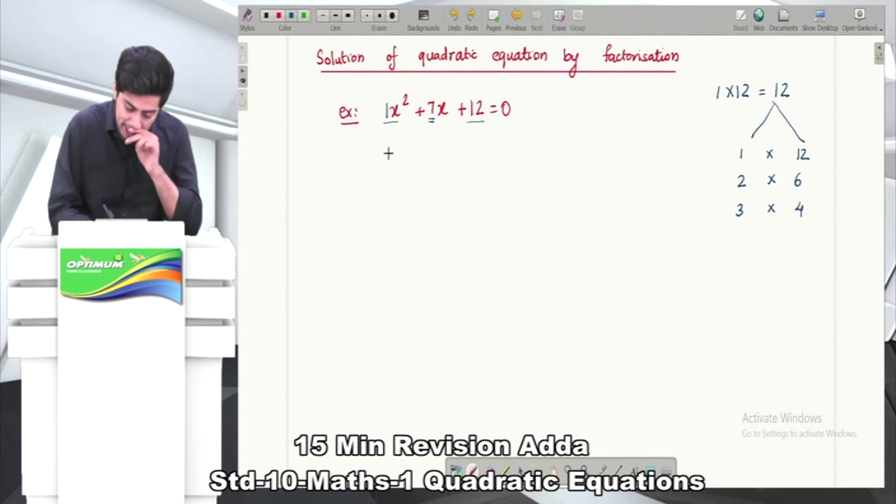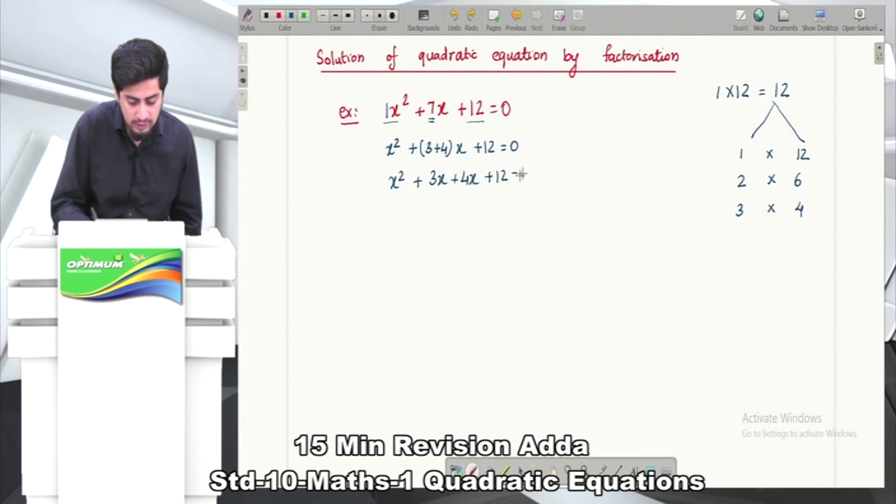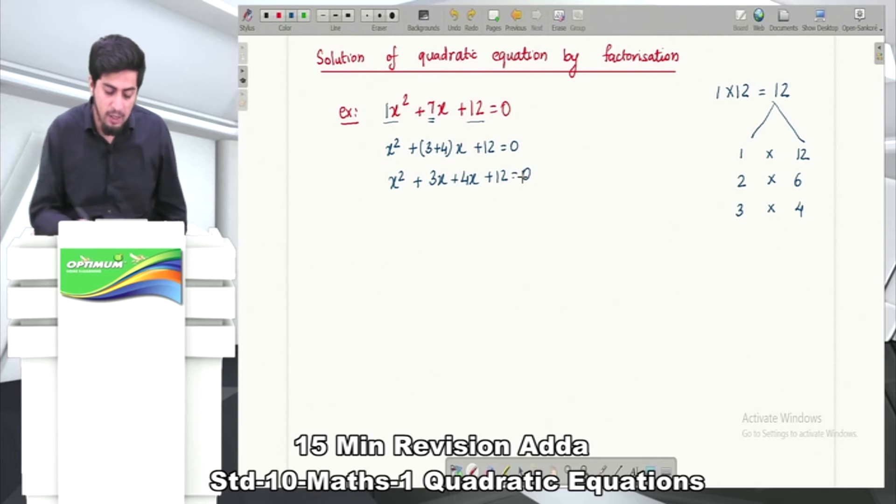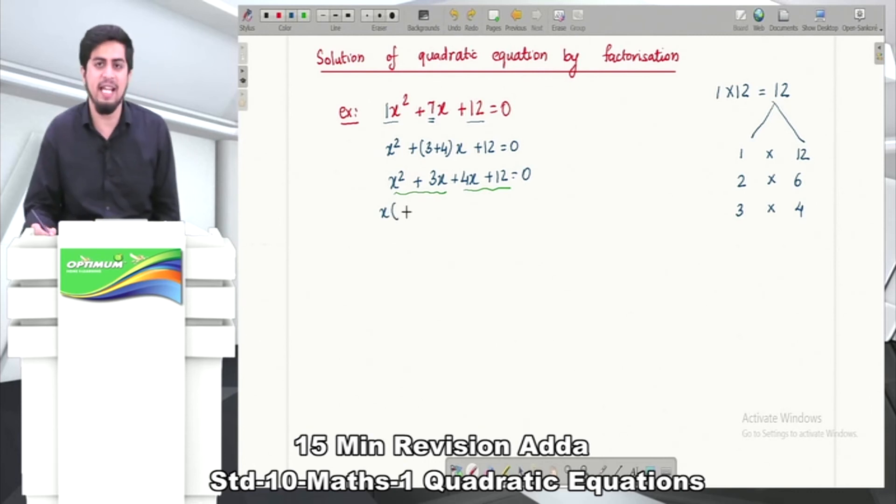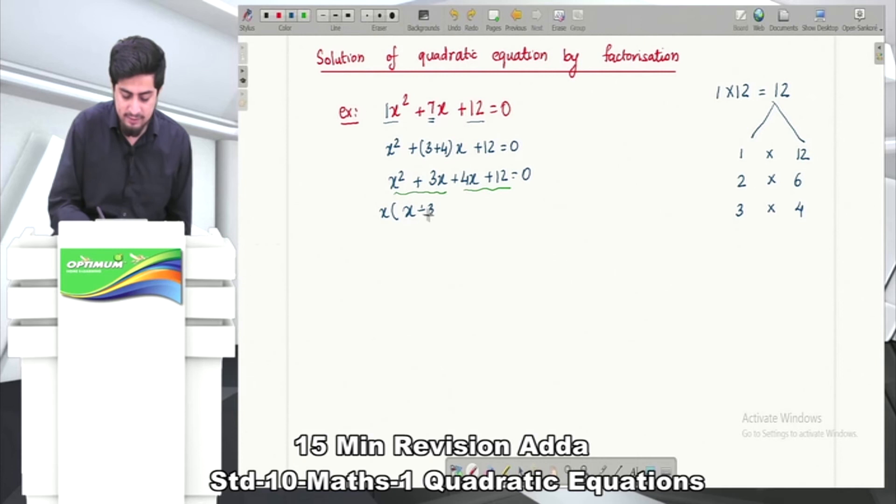We'll split up the middle number. Write x² as it is, split 7x as 3x + 4x, and 12 as it is: x² + 3x + 4x + 12 = 0. Now we'll factor separately. This will be x² + 3x + 4x + 12 = 0. We'll divide this into two parts: first part and second part. From the first part, can we take something common? x is common in x² and 3x, so x(x + 3). From the second part, 4 is common, so 4(x + 3). This equals 0.